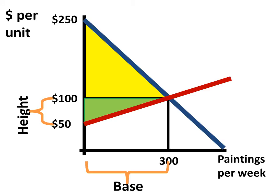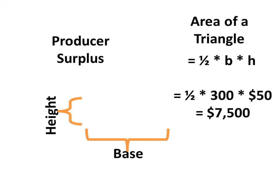We can do the same thing for producers. They have a producer surplus. And here we can find the height of this triangle as being the difference between the price and the intercept where the supply curve intersects the price line, so at $50. So a $50 height and, again, a base of 300 units. So one-half times base times height, one-half times 300 times 50, is equal to $7,500 worth of producer surplus.